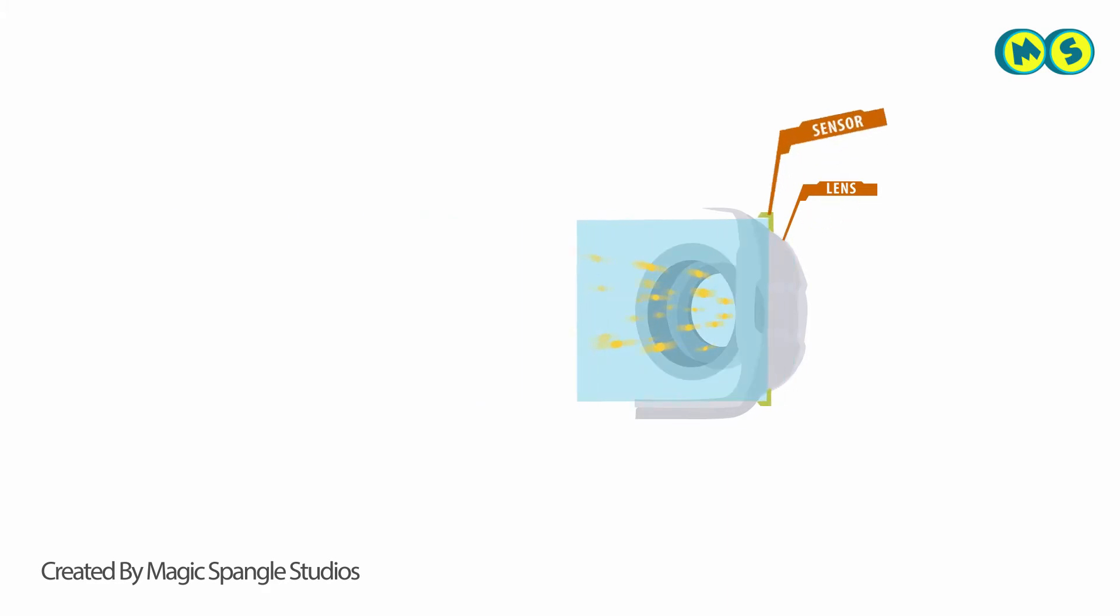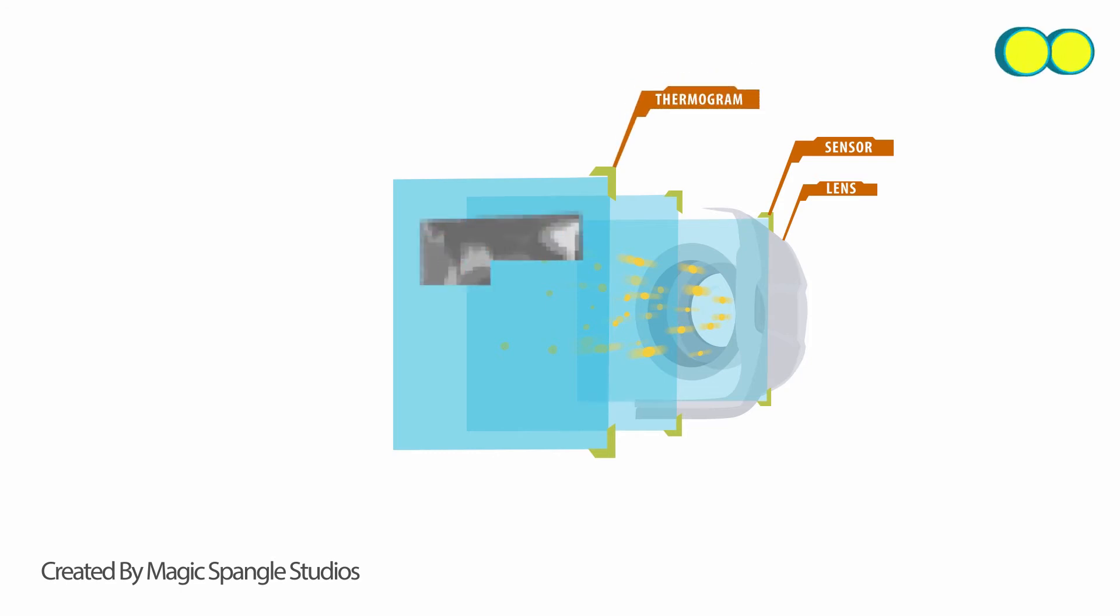Then, the light hits a sensor that scans the focused light and draws from several thousand points in the field of view. Through this process, an intricate temperature pattern known as a thermogram is created, which only requires 1/30th of a second to develop.